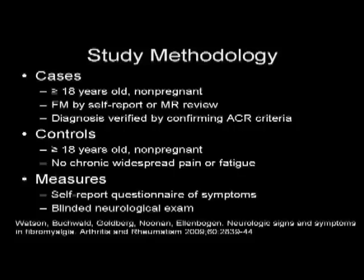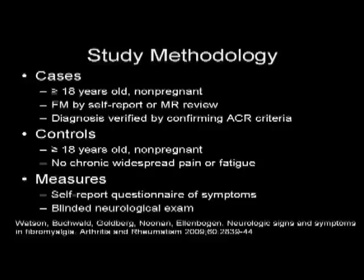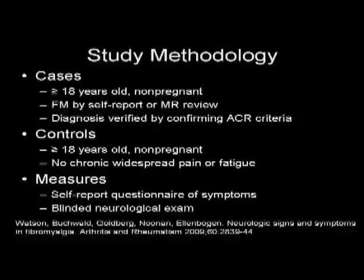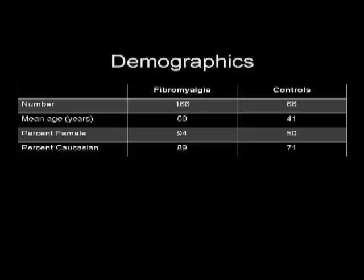For our study, cases had to be greater than or equal to 18 years old, had to have fibromyalgia by self-report or medical record review, and their diagnosis was verified by conforming to ACR — American College of Rheumatology — criteria. Controls also had to be greater than 18 years old without complaints of chronic widespread pain or fatigue. We did a number of self-report questionnaires and symptoms, and I did a blinded neurological exam on every subject. We had 166 individuals with fibromyalgia and 66 controls. The FM group was a little older, more female, and more Caucasian, and these differences were adjusted for in the final analysis.